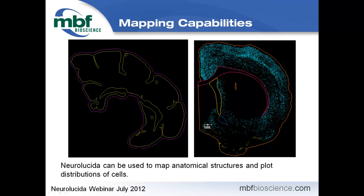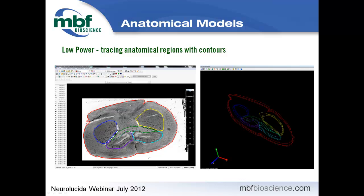Here is an example of contour mapping. You can use Neuralucida at low power to trace anatomical regions, as seen on both the left and right sides. You can also use Neuralucida to mark the position of cells or any other particles you want to track — the blue circles on the right are marking cells. These are examples of anatomical reconstructions, and now I'd like to switch to the program to show how this is done.